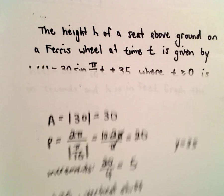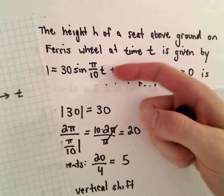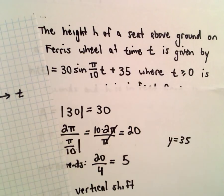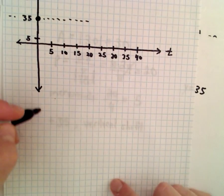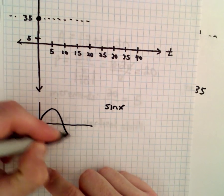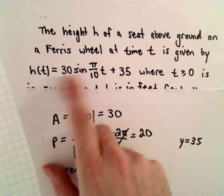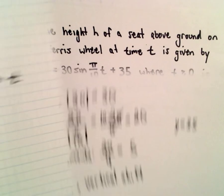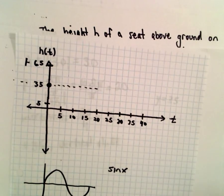You can always plot some points. If you plug in t = 0, you get sine of 0 which is 0, so we start right at 35. If you think about the normal sine function, it goes up, comes back down, goes down, and comes back up. This function does the exact same thing since the coefficient out front of sine is positive. You can plug in t = 5, t = 10, t = 15, etc. to verify you're getting the right values.